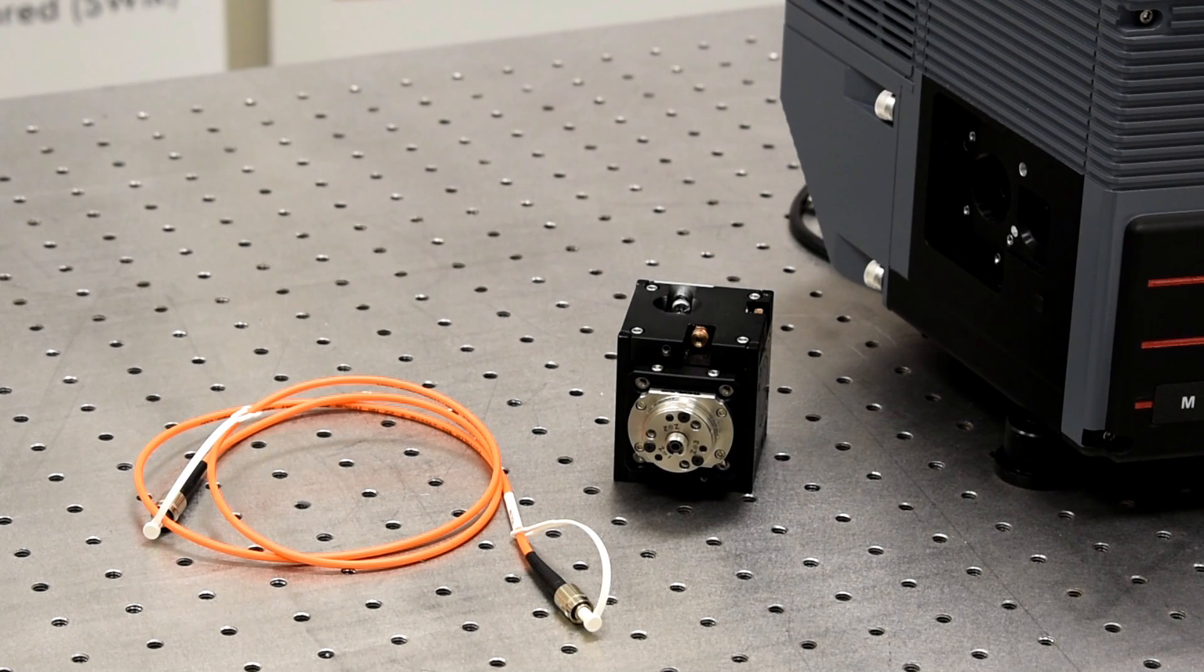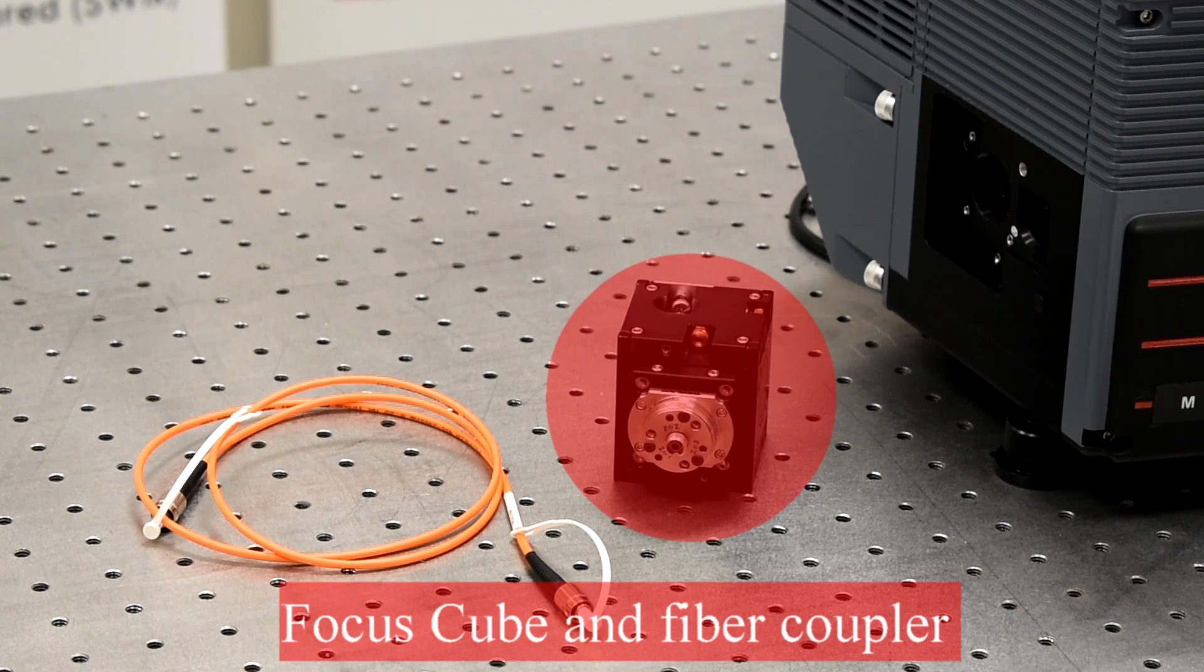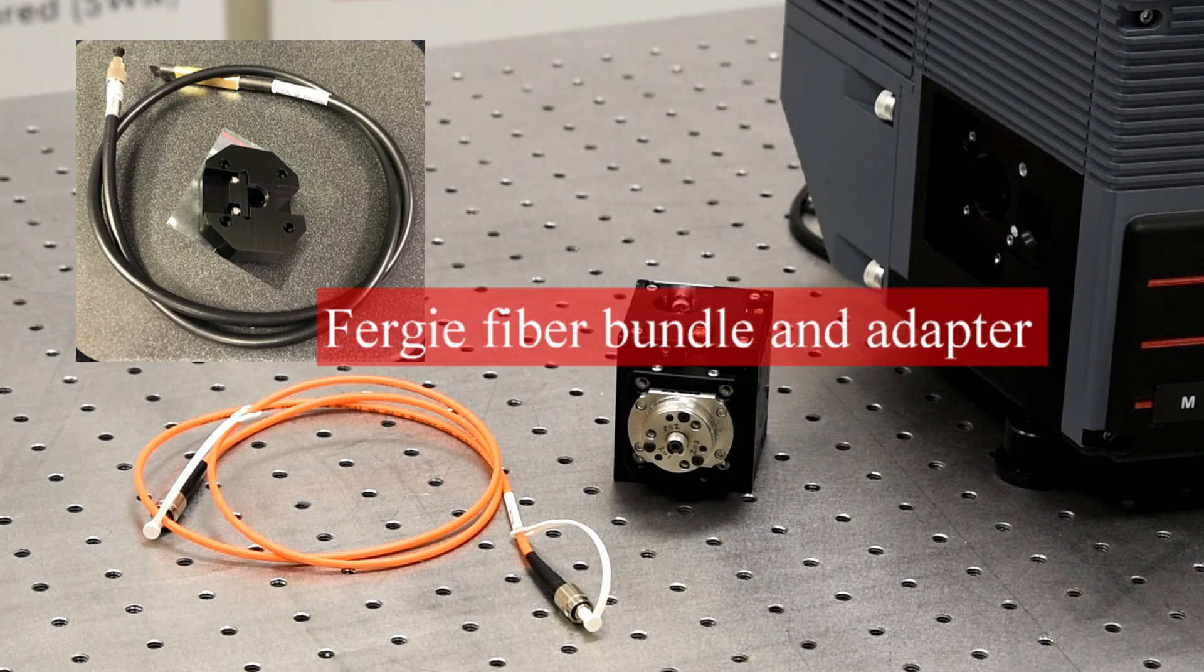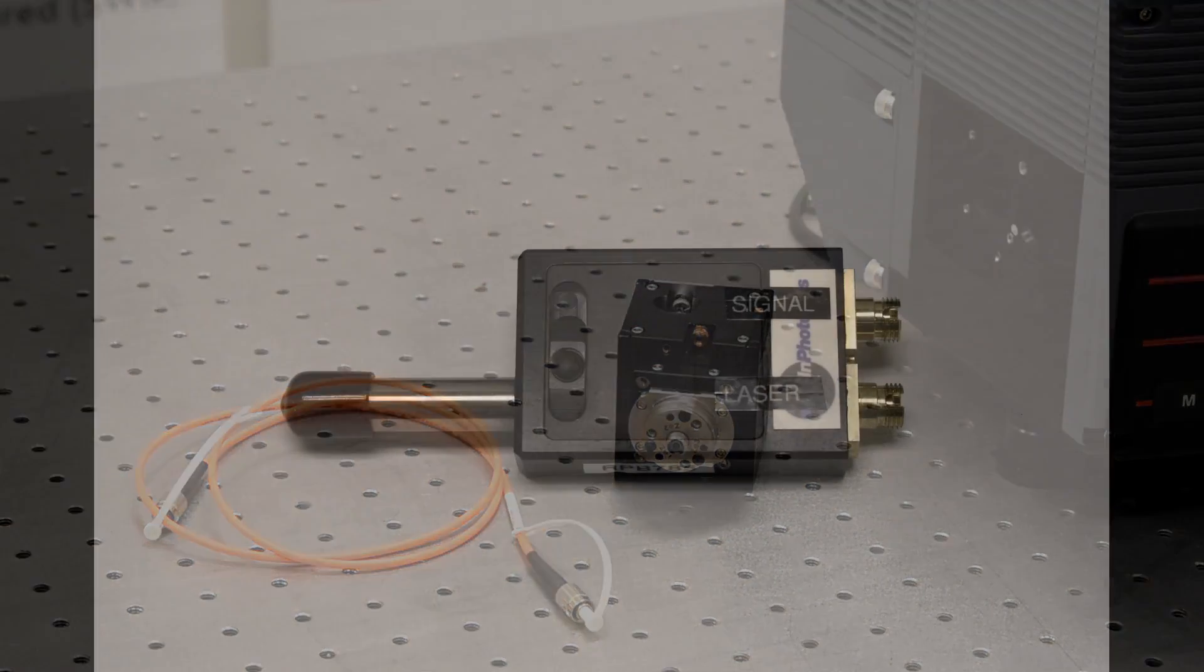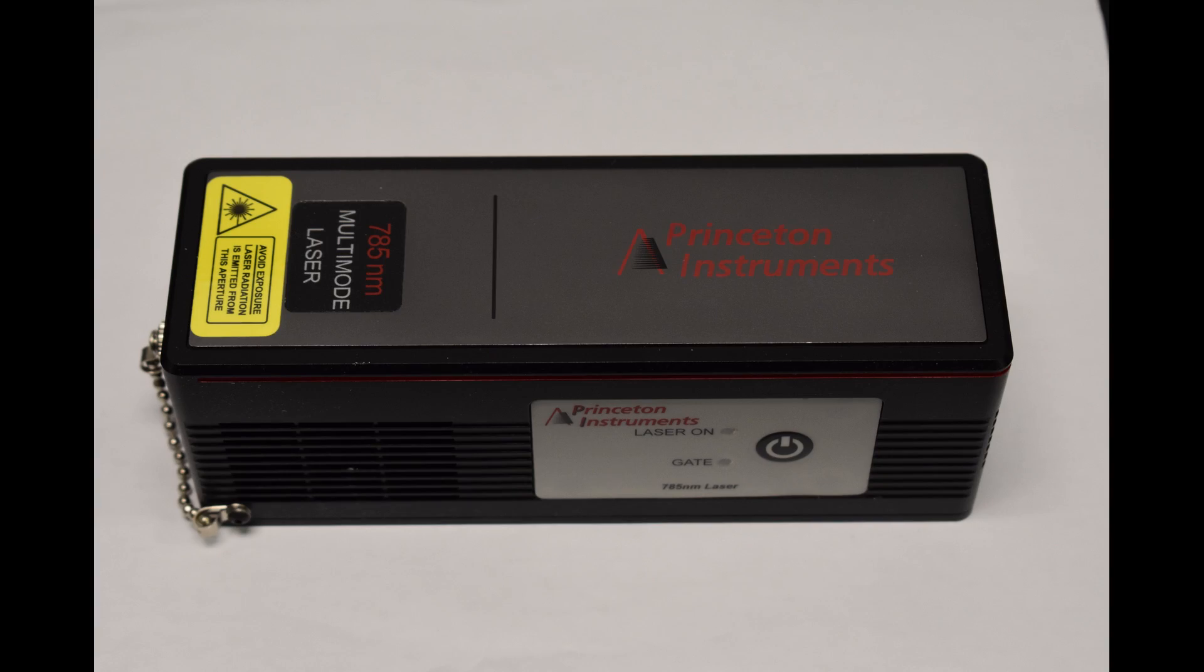We will use FC fiber cables for laser excitation and signal collection, a Fergie focus cube with attached fiber port, a Fergie fiber bundle and fiber bundle adapter, a fiber-connected Raman probe, and a 785 nanometer excitation laser.